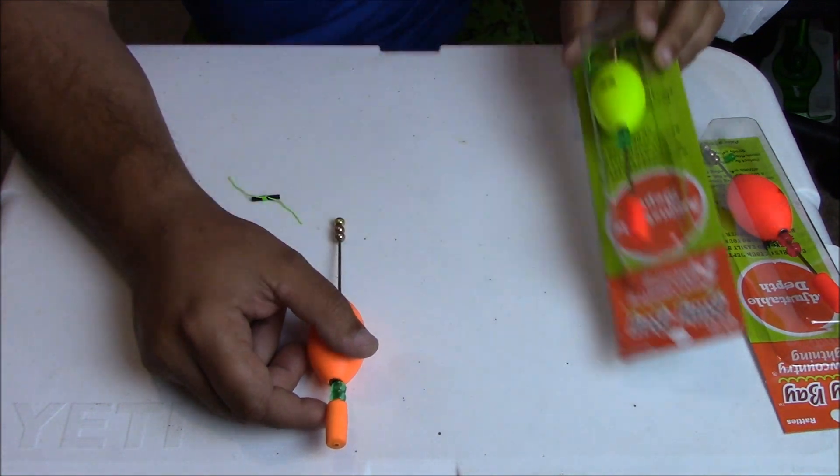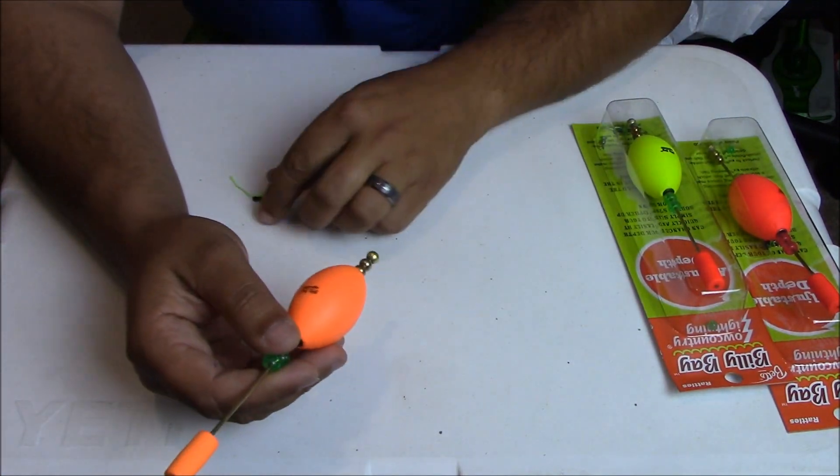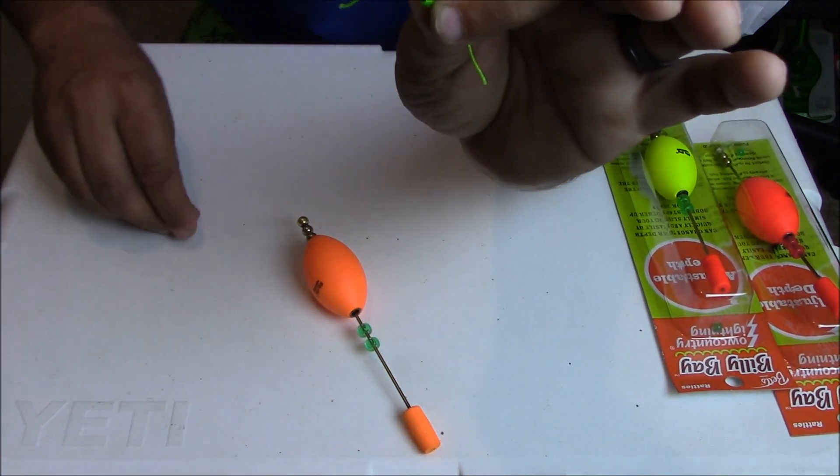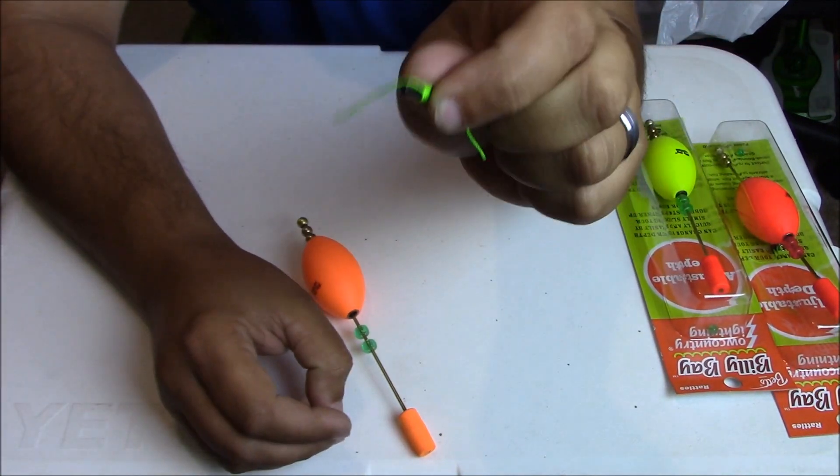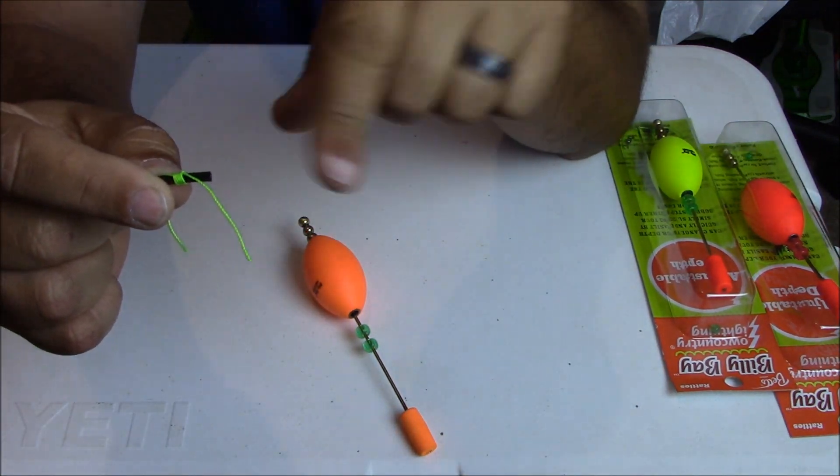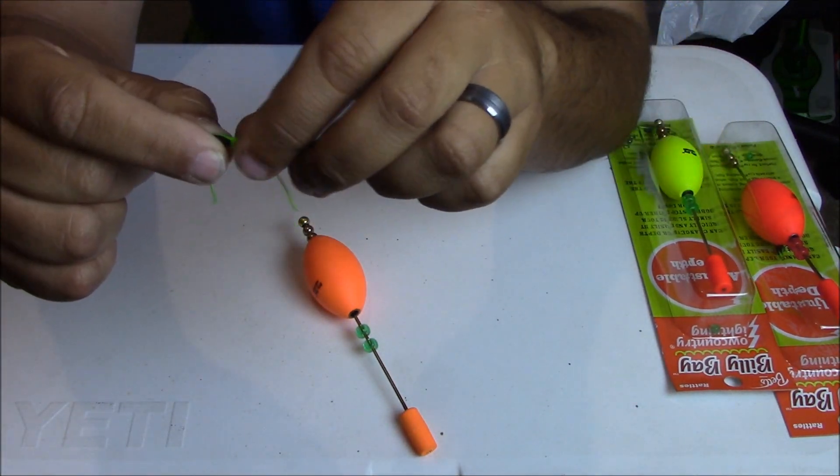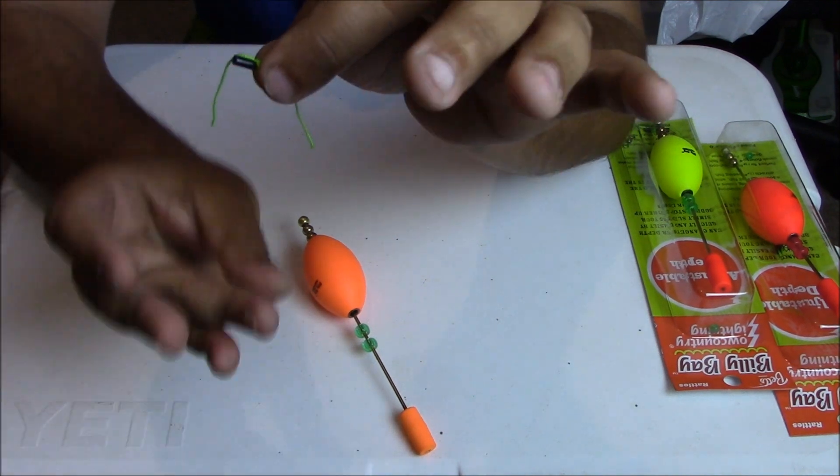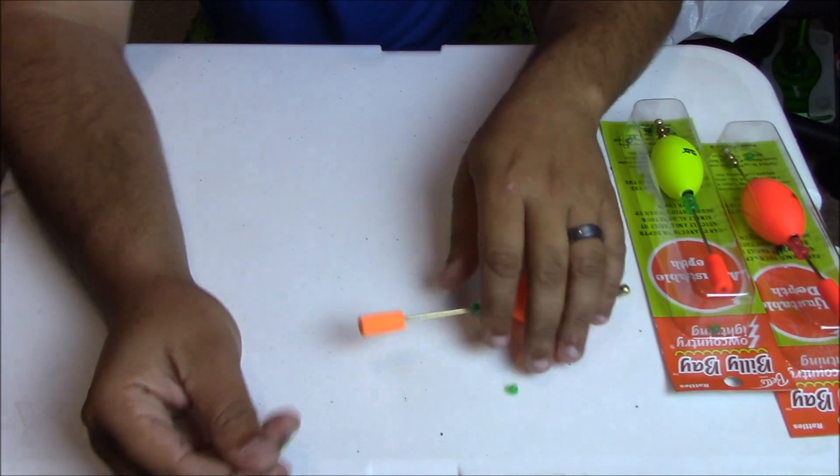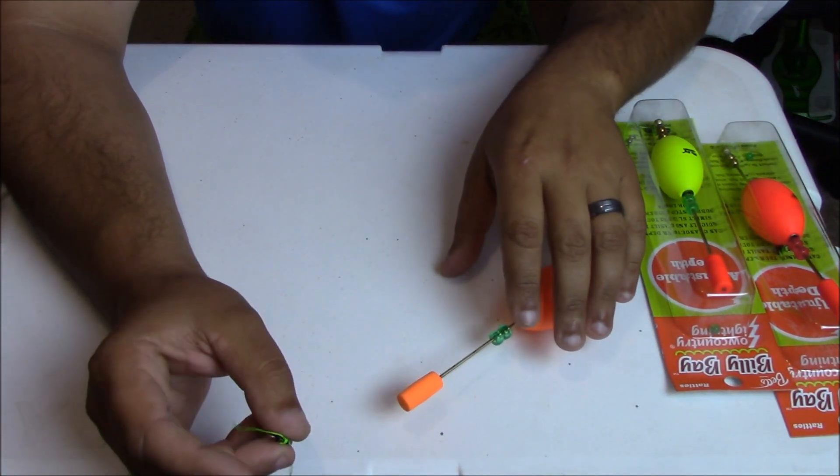What you do is it comes with a little string attachment here and a bead. You tie this onto your line, you just slide your line through this little plastic insert, you pull these two tight, and you put the bead behind it.